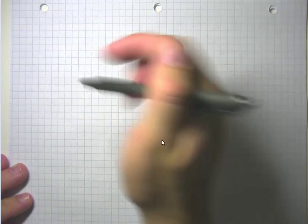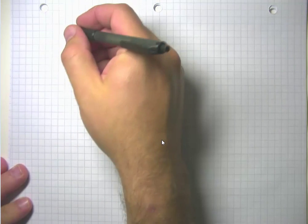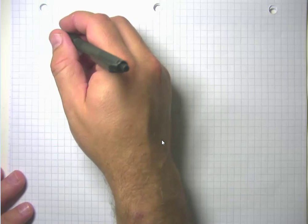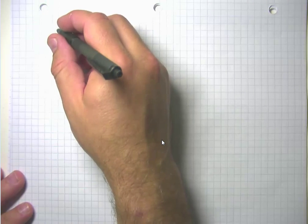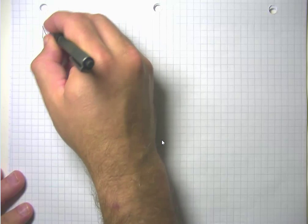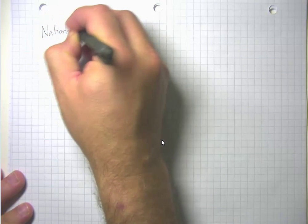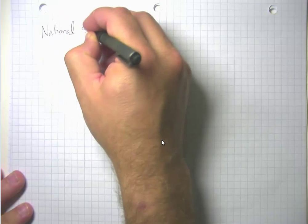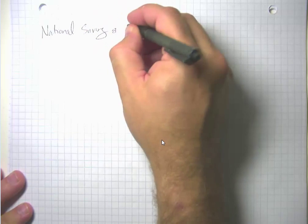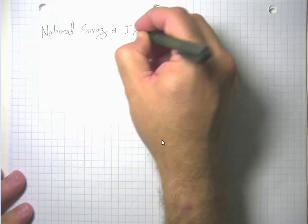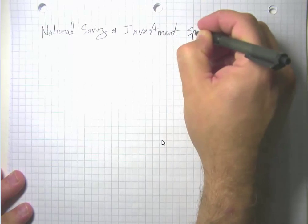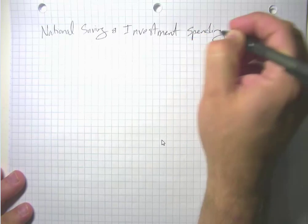I'm going to leave stock market valuation aside for now until we can deal with the idea of risk, because the stock market definitely involves risks. I'm going to move on then to the idea of national saving and how that influences the amount of investment spending an economy undertakes.